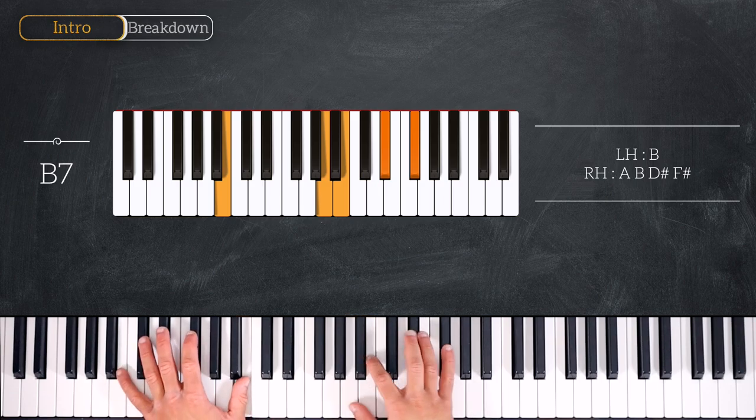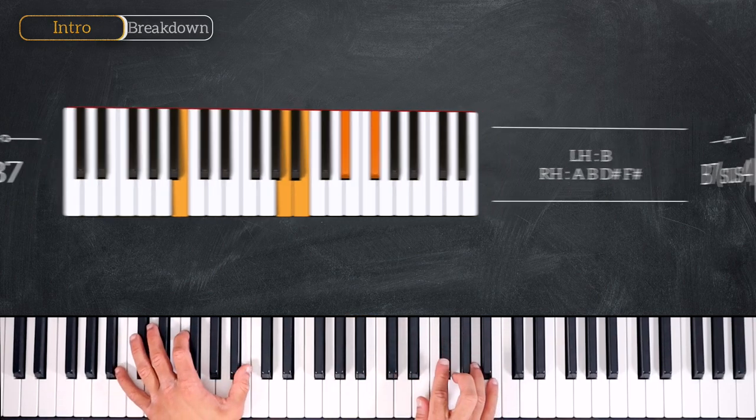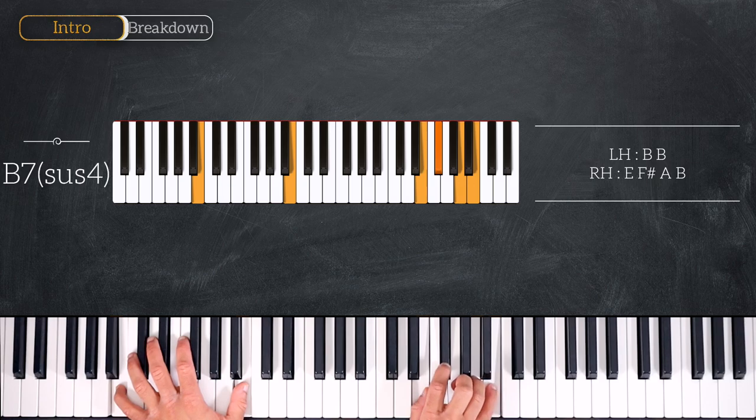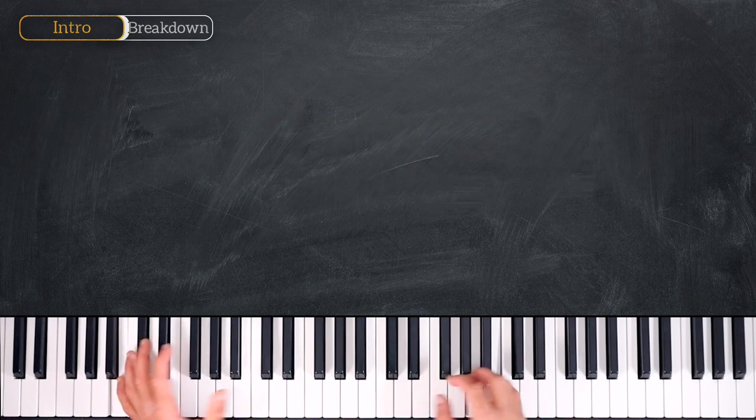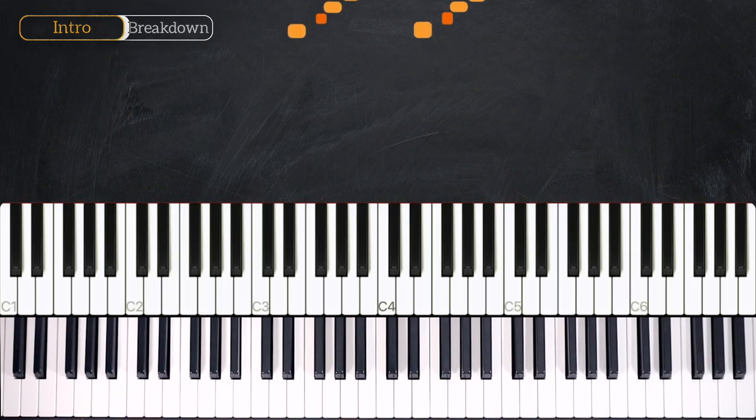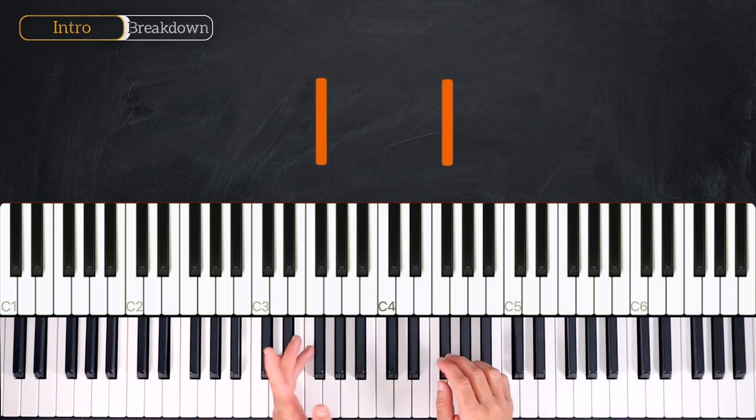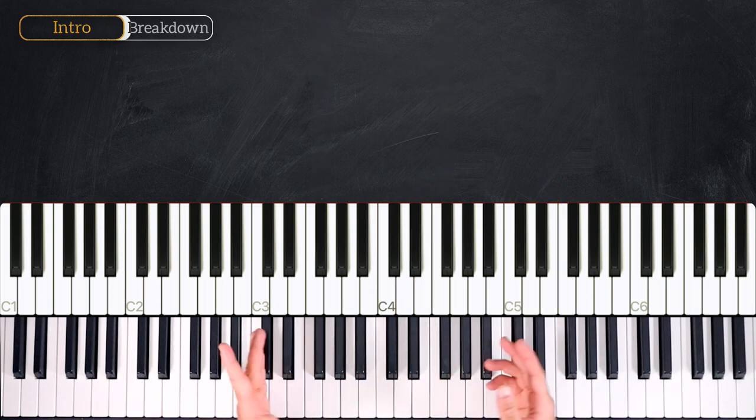And we'll finish by playing B7 sus4. This time we play octave B on the left hand and E, F sharp, A and B on the right. Very good. So we are in the key of E minor. We just have an F sharp.